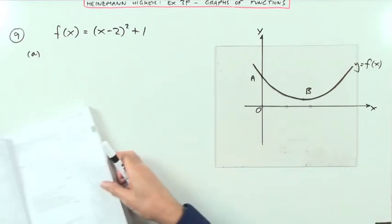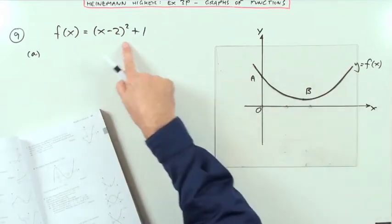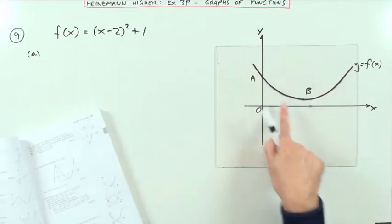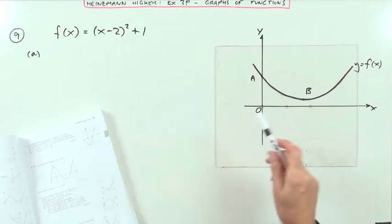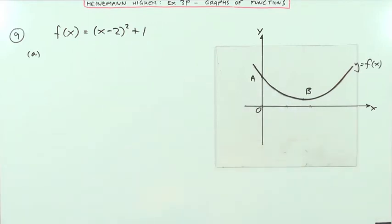So the first part says, given this function, I've actually got it stated explicitly here, and here's its graph. First part is, what are the coordinates of A and B? Well, here's the function, so you can write them down.